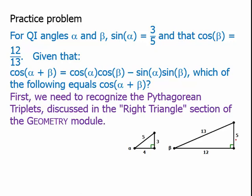We're dealing with these Pythagorean triplets: 3, 4, 5 and 5, 12, 13. Notice that alpha has a sine of 3 fifths, so we see that the adjacent leg is 4. Beta has a cosine of 12 thirteenths, so the opposite leg is 5. And this means that we can find the cosine of alpha, that's 4 fifths, and the sine of beta, that's 5 thirteenths.